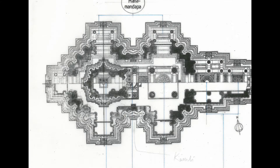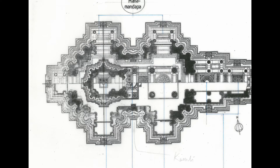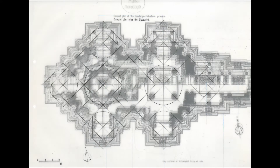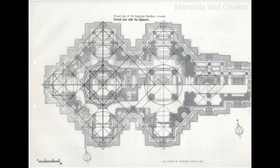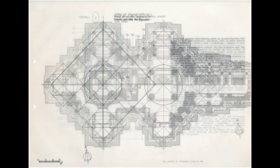In a treatise on the arts by Rajabhoja, there's a series of organic geometric progressions called the Guna Sankalita, based on factors of 3, 4, 5, or 6. The mandala and chakra provide the plan and the starting point for setting out. The Kartaguna Sutra — a geometric progression based on repeating fourths — seems to fit the best.